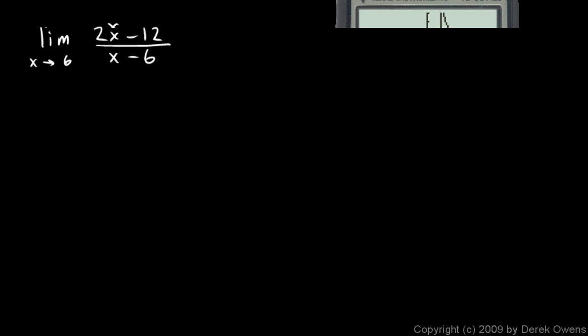Here's another one. This one ends up being pretty easy. The limit as x approaches 6 of 2x minus 12 over x minus 6. And with just a little bit of thought, you can see that the numerator and the denominator both become 0 as x gets close to 6.